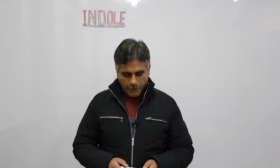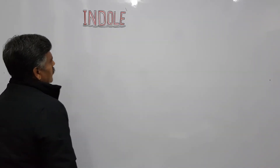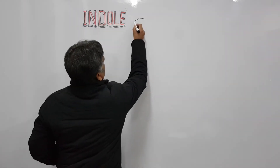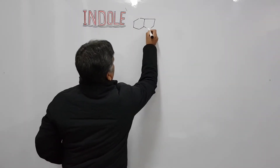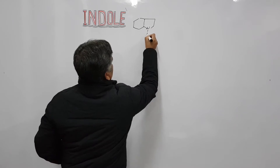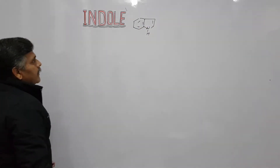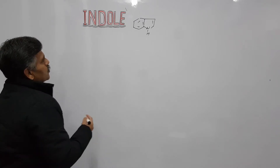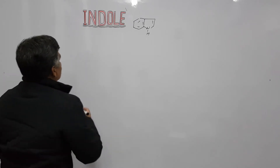Today I will discuss some methods which are used for the preparation of indole. We know that indole is a fused ring heterocyclic compound in which benzene is fused with a five-membered pyrrole. The first method used for the preparation of indole is Fischer indole synthesis.